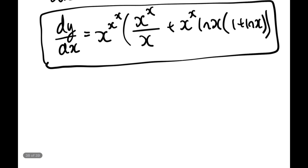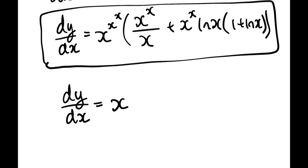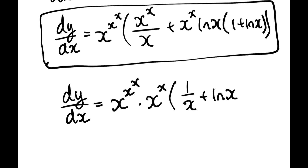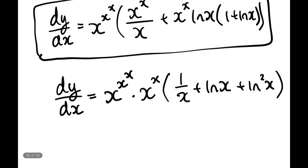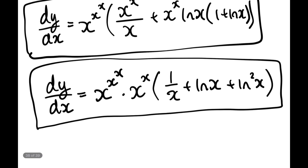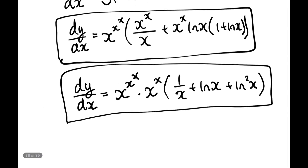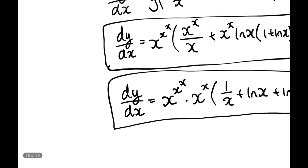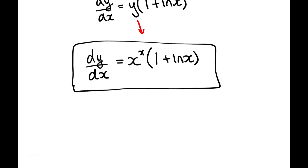We can factor out x^x to simplify. Factoring gives dy/dx = x^(x^x) · x^x · (1/x + ln(x) + ln²(x)). That is a cleaner form, though the un-factored version above is perfectly acceptable as a final answer. Thank you for watching, and thank you for 1,000 subscribers!